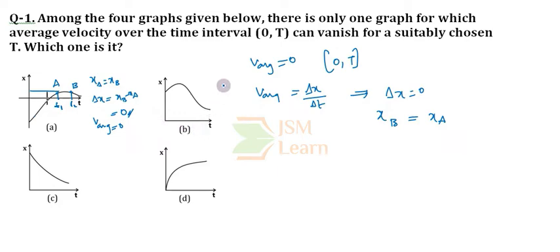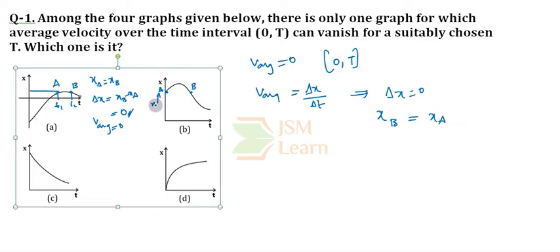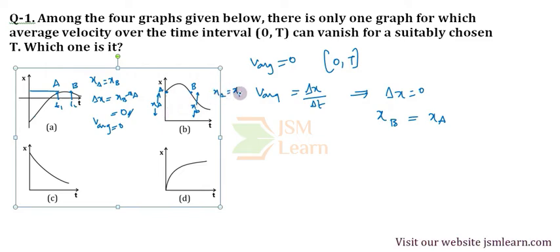Coming to Option B, let us find the two points which are on the same level on this graph. The two points at the same level are possible — from here to here. Let the first point be A and second point be B. The displacement of A is XA and displacement of B is XB. Projecting to the displacement axis, XA and XB are both equal. So the total displacement XB minus XA equals 0.